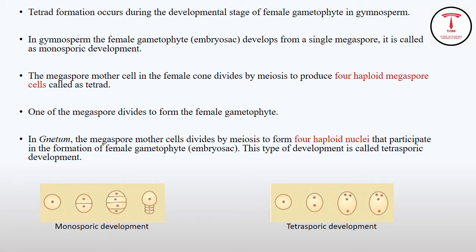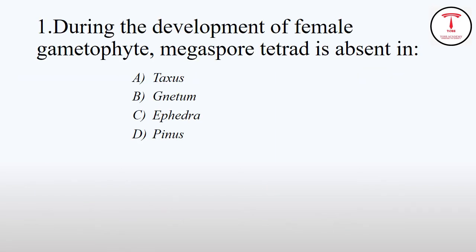In this case, megaspore mother cell undergoes meiosis and divides to form 4 haploid nuclei, and all 4 nuclei are involved in female gametophyte formation. This type of development is known as tetrasporic development. So the answer is Gnetum.